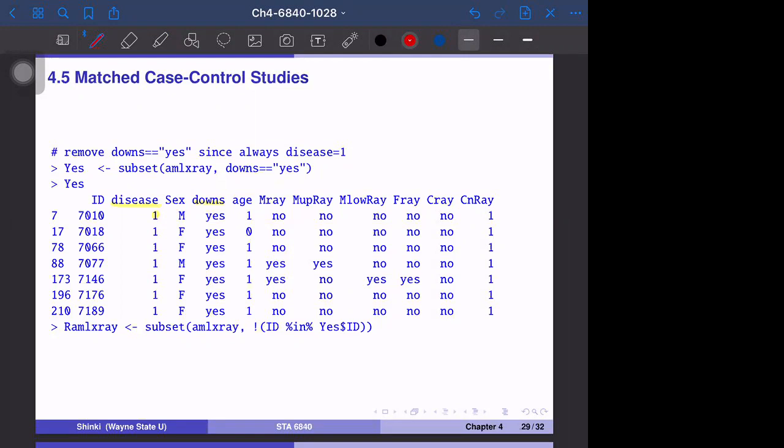In the likelihood function, we have the expectation of alpha plus beta times x for the case. The denominator is exponential of alpha plus beta x_i, where i is the i-th observation in the j-th group.